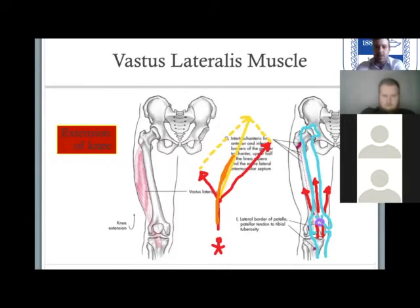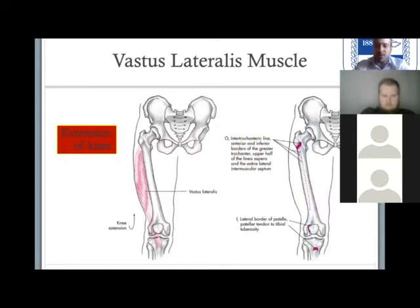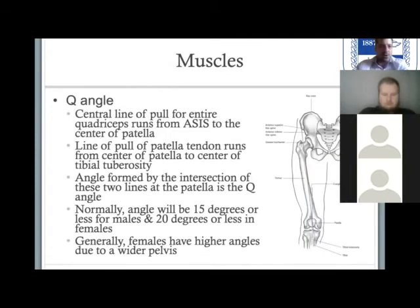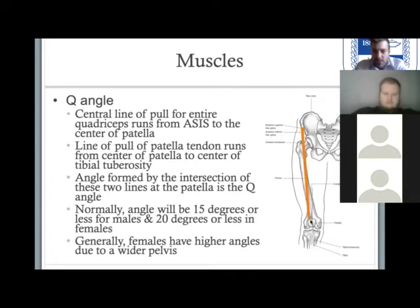Let's look at another mechanism for injury associated with the patella that also uses vector addition but is a slightly different example — it's called the Q angle. A Q angle is a line that goes from your ASIS, your anterior superior iliac spine, to the center of your patella. That line isn't 100% straight up and down — there's usually a little bit of an angle, about 15 degrees, maybe 20 degrees for females or a little bit wider depending upon the structure of your hips.